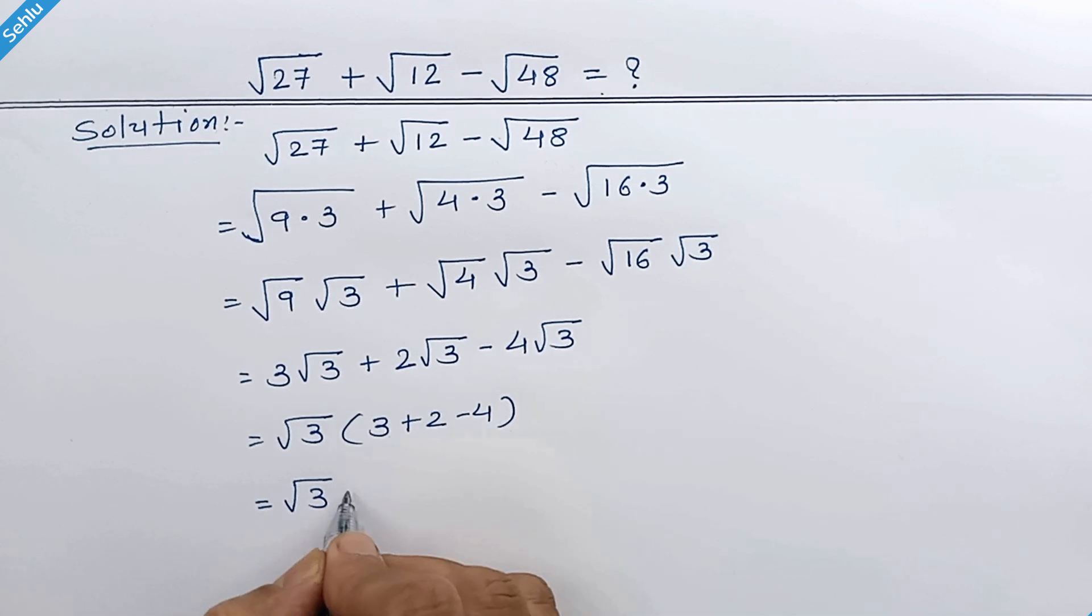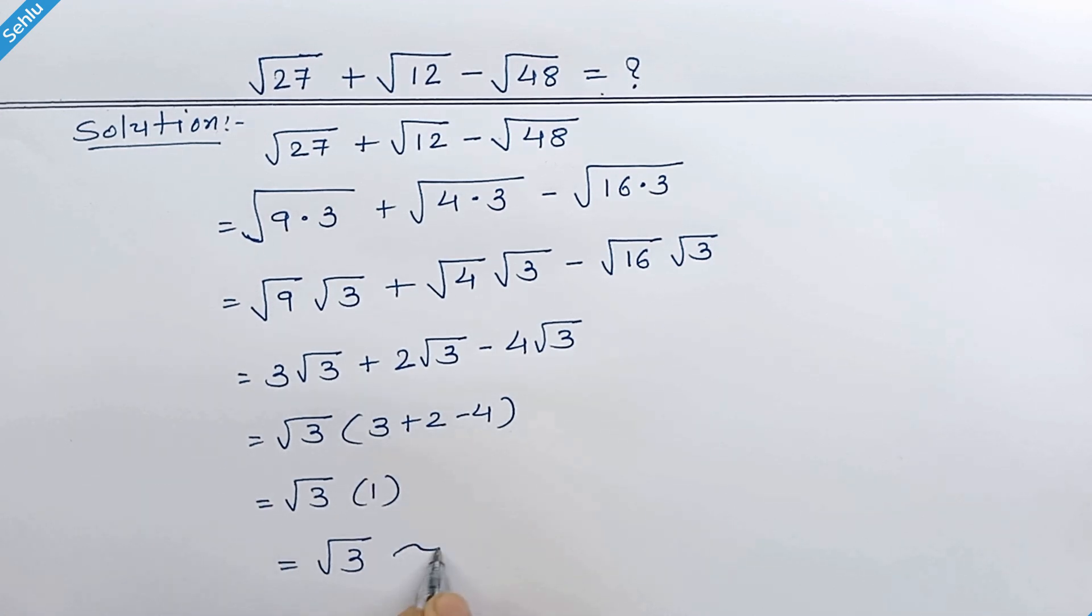3 plus 2 is 5, minus 4 will be 1. So square root 3 is our answer, and the decimal approximation of square root 3 is 1.732.